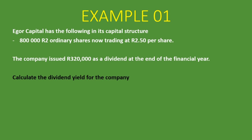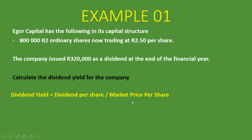The requirement is to calculate the dividend yield for the company. The dividend yield is the dividend per share divided by the market price per share. The market price per share is the price the share is currently trading at — we are told it's R50 per share, so we already have the market price per share. Now we need to calculate the dividend per share.